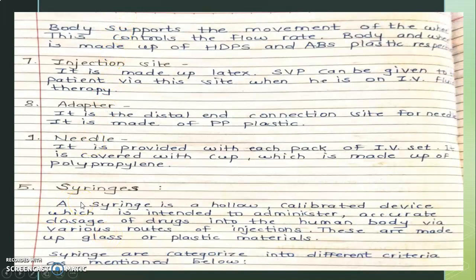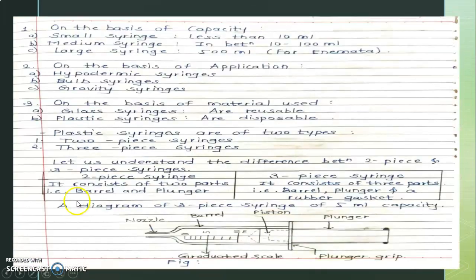Next are the syringes. A two-piece syringe consists of two parts: the barrel and the plunger. A three-piece syringe consists of three parts: the barrel, the plunger, and a rubber gasket. The syringe has a graduated scale of 0.5 and 10 ml.